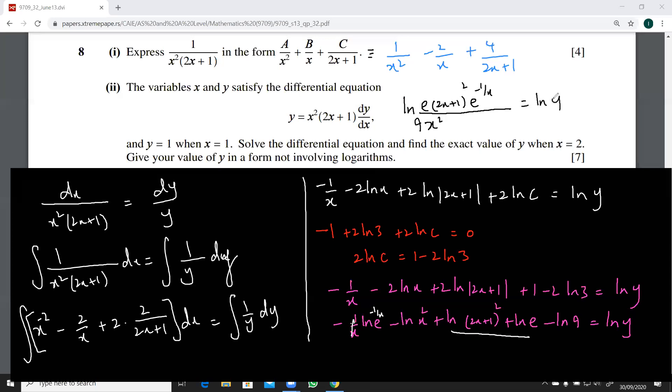That is equal to ln y. So finally your y is equal to e raised to the power 1 minus 1 over x into 2x plus 1 whole squared over 9x squared. That is your answer.